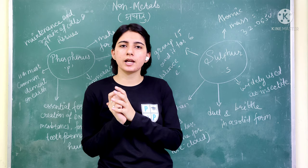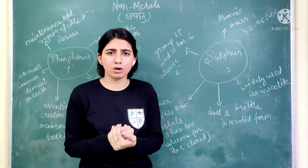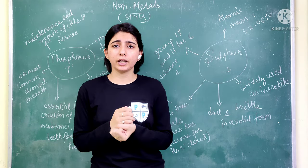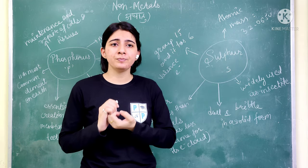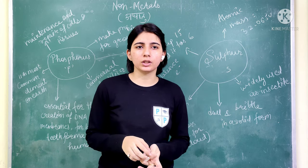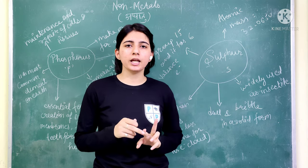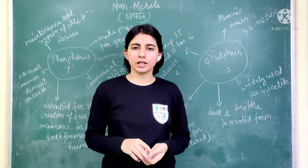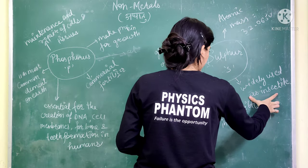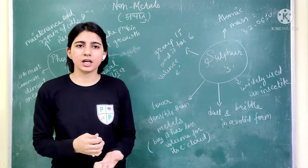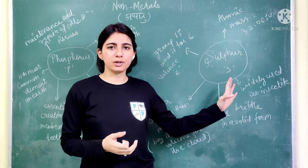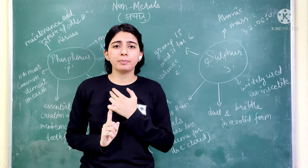Sulfur exists in the earth in crystalline solid form, like sugar and salt. It is bright yellow in color. The most important point is that sulfur is a poor conductor of electricity. It is used in insecticides, fungicides, and to prevent chemical reactions. It is also used in gunpowder.